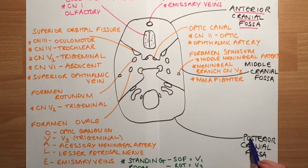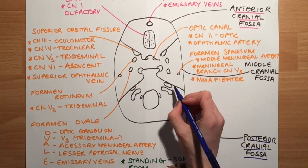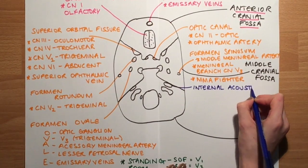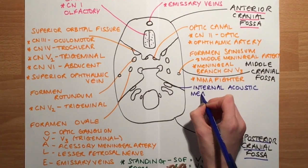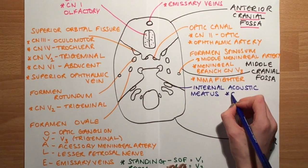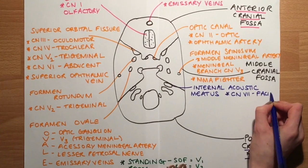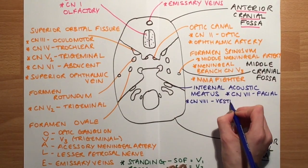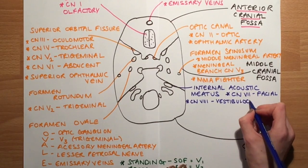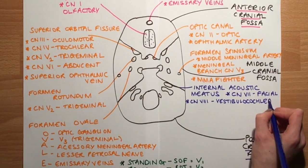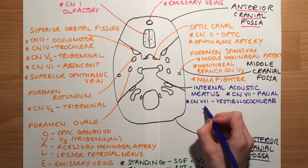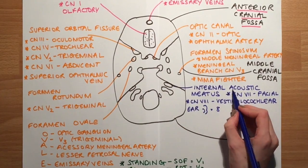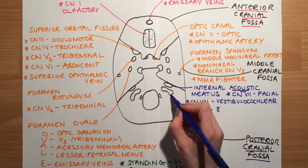First we discuss the internal acoustic meatus, which transmits two cranial nerves: cranial nerve seven, the facial nerve, and cranial nerve eight, the vestibulocochlear nerve. It also transmits the labyrinthine artery. A good memory aid is that the ear looks like the number eight, and thinking of 'acoustic' helps you remember eight — so you'll remember the vestibulocochlear nerve passes through there.